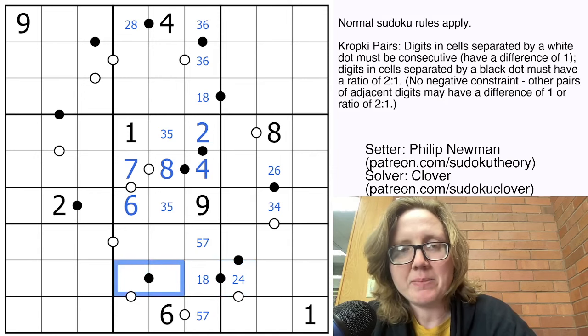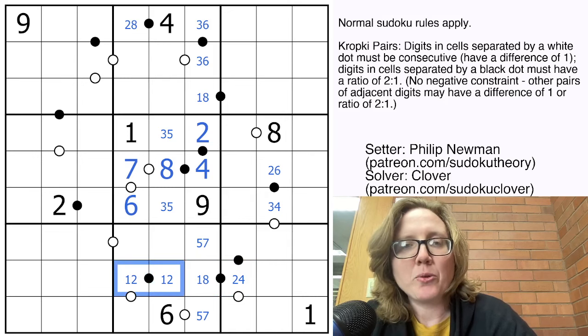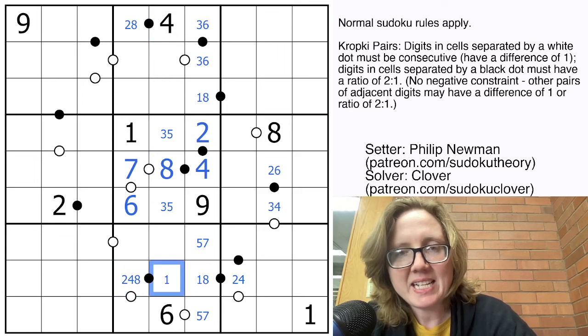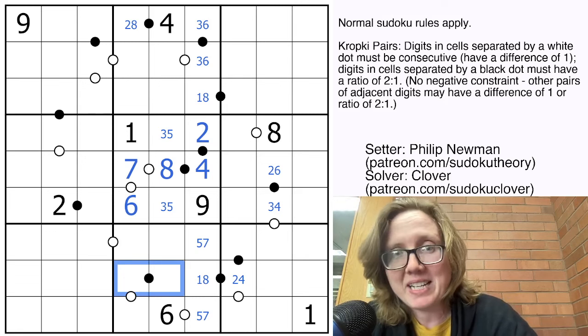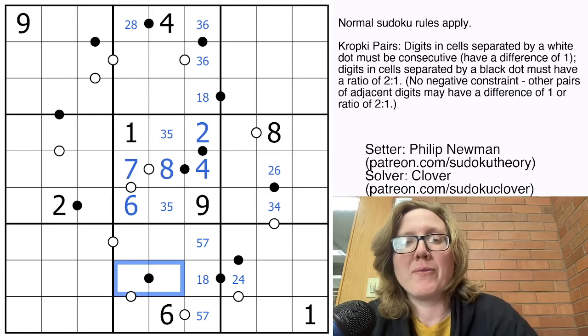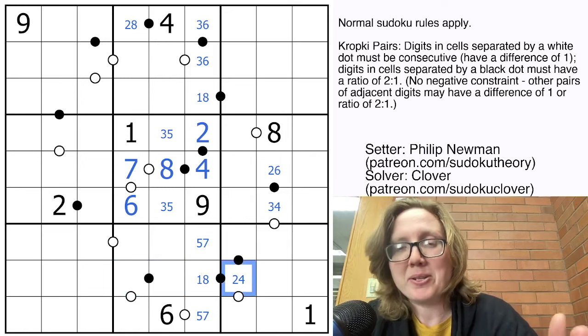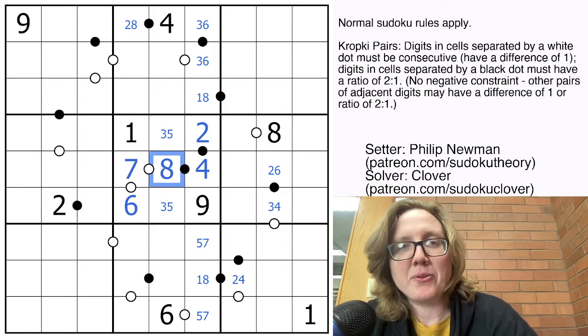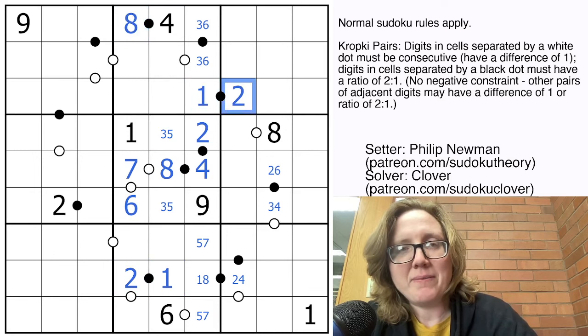Now, what is this pair going to be? So these can't include a 6, so they have to be either 1 and 2 or 4 and 8. It can't be 4 and 8 because of the 4 and 8 in this column, so it is 1 and 2. So that makes this an 8, which makes this a 1 and fills in a 2 here.